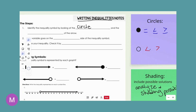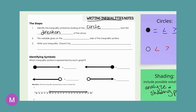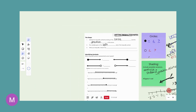The second thing we're going to do is look at the shading — the direction of the arrow or the shading. The second step is: the variable goes on the left. Always put the variable on the left. That's something I need to reiterate about the alligator tail trick — that only works when the variable is on the left. It would not work if the variable was on the right because you'd have the opposite situation.